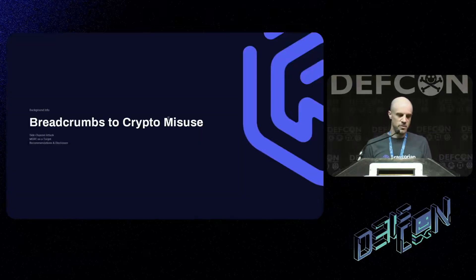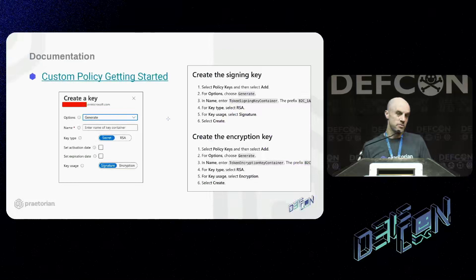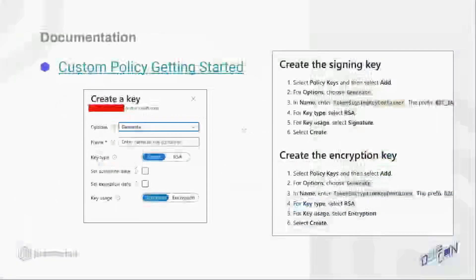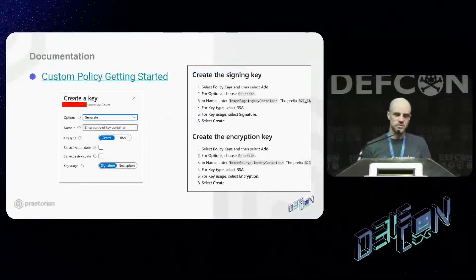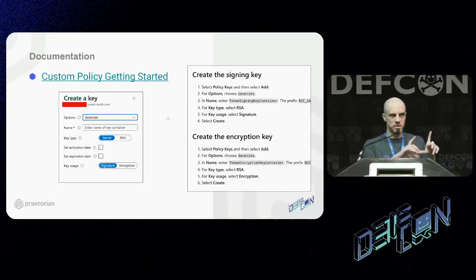Part one of this vulnerability started when I began reading the documentation. As shown in the screenshot on the right, it says to set up a signing key with type RSA and usage signature, and then an encryption key with type RSA and type encryption. Knowing a bit about asymmetric encryption, this struck me as a little strange. So I began to dig deeper. The screenshot on the left shows what it looks like in the Azure portal when you're setting it up — just a click box to auto-generate your keys.